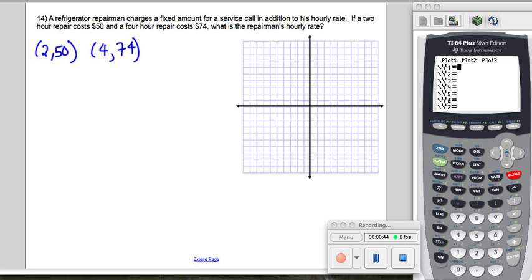The hourly rate is really the slope. See, he charges a certain amount, a fixed amount, just to show up. That's our b, that's our y-intercept. Initially, when he just shows up, he's going to charge us a certain amount, a fixed amount of money no matter what.